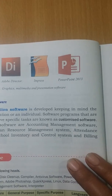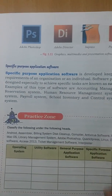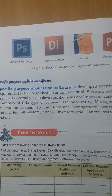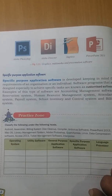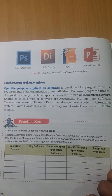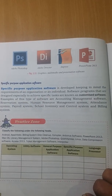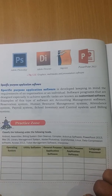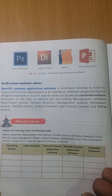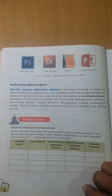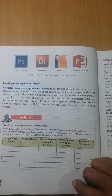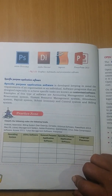Specific purpose software are designed according to the requirement of a particular individual or organization. Examples include payroll systems, account maintenance systems, billing systems, and resource management systems. All of these are considered specific purpose application software.